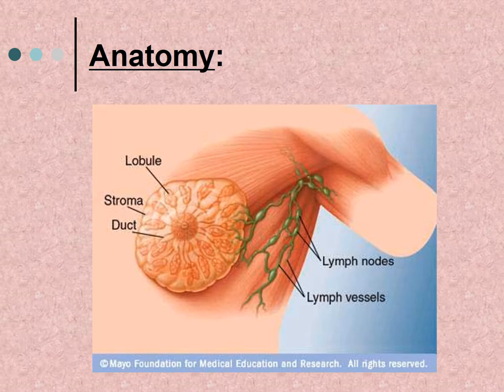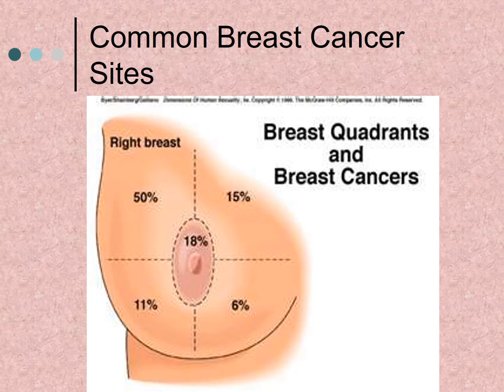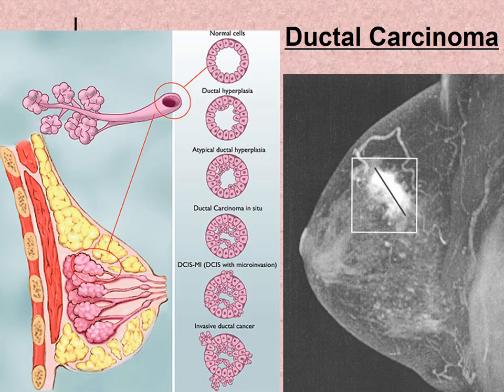Review your anatomy of the breast and the common sites where breast cancer occurs by quadrant. The left upper quadrant accounts for 45% of cases, the upper right quadrant 15%, the nipple area 18%, the left lower quadrant 10%, and the right lower quadrant 5%.